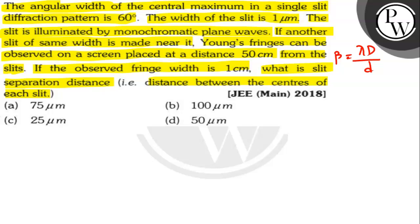Young in 1882 demonstrated the phenomenon of interference of light by a double slit experiment. In this experiment, A and B are two fine slits at a distance d apart. If they are illuminated by a strong source of light of wavelength lambda and a screen is placed at a distance D from the slits, the two waves starting from A and B superimpose upon each other, resulting in an interference pattern on the screen with alternate dark and bright fringes. The point of maximum intensity is known as the central maximum.